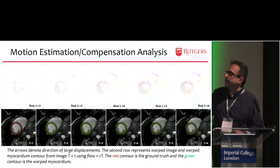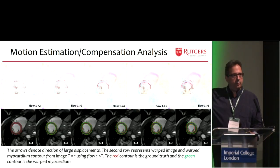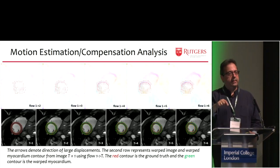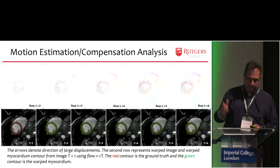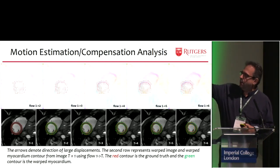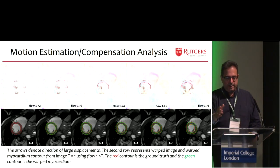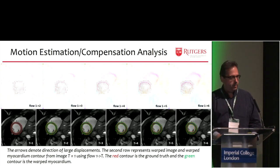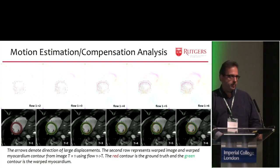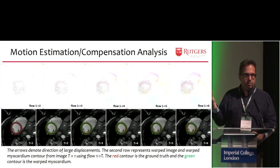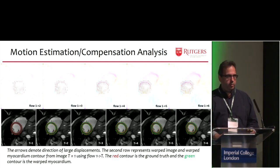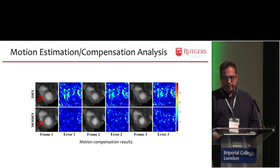This is the estimation — a prelude of what we can do. I can segment at the same time. Segmentation should not happen after you make the image; you should segment in k-space. The arrows denote the direction of large displacements. The second row represents the warped image and the warped myocardium contour for image T equals one using flow one greater than T. The red contour is the ground truth and the green contour is the warped myocardium — very close. These are encouraging results and we are pushing further in this direction.